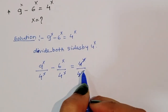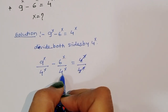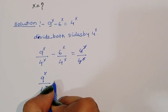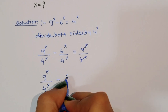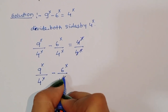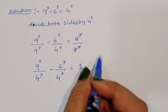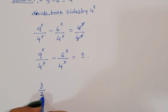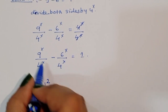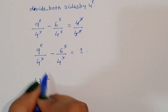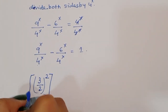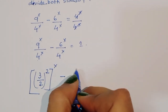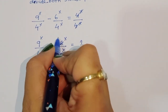The 4^x cancels on the right side. So (9/4)^x minus (6/4)^x is equal to 1. We can rewrite this as (3/2)^2x minus (3/2)^x, since 9 = 3², 4 = 2², and 6 = 2×3.